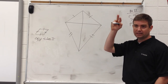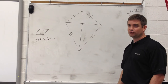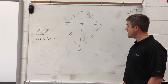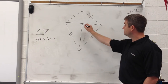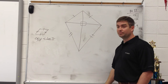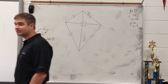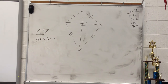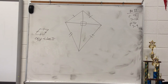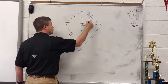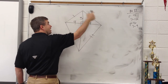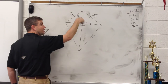We have two properties that go with kites. Property one: if a quadrilateral is a kite, then its diagonals are perpendicular. So there's a right angle in the middle — all four angles formed are right angles. That means we have right triangles and can use the Pythagorean theorem. If this leg is 3 and this leg is 4, what would the hypotenuse be? Five and five, because 3-4-5 is a Pythagorean triple.